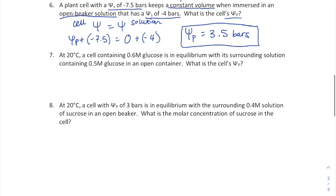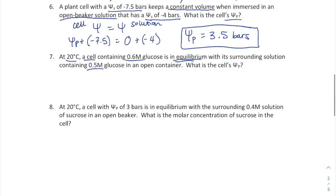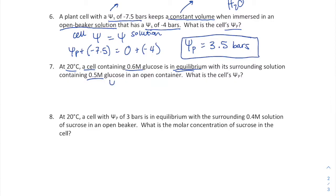Question seven: given concentrations and temperatures and mentioning equilibrium — which signals no net flow — so the water potential of the cell equals that of the solution. Since it's an open container, the solution's water potential equals its solute potential: negative iCRT. For the cell, there's a pressure potential plus its own solute potential: also negative iCRT.